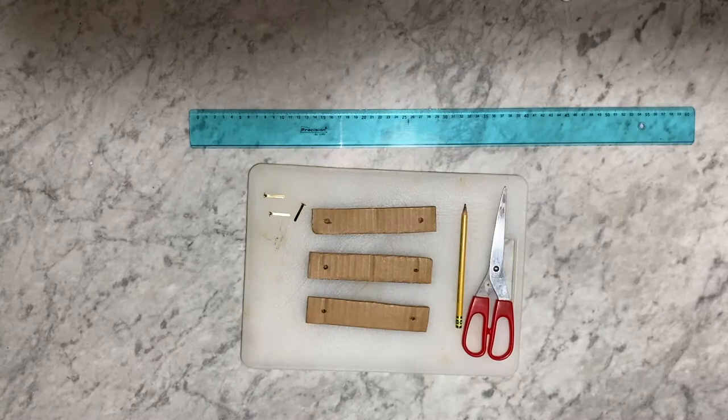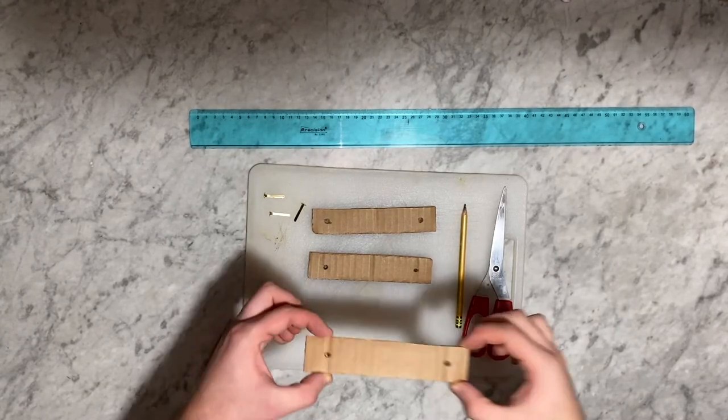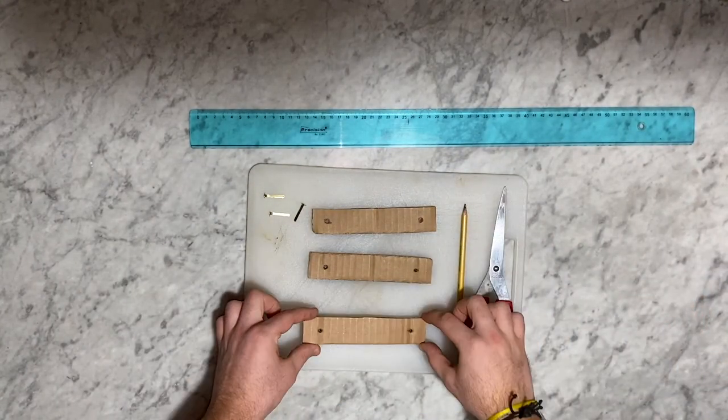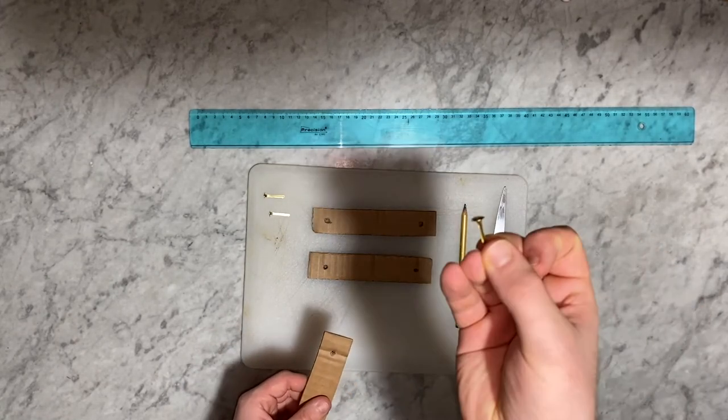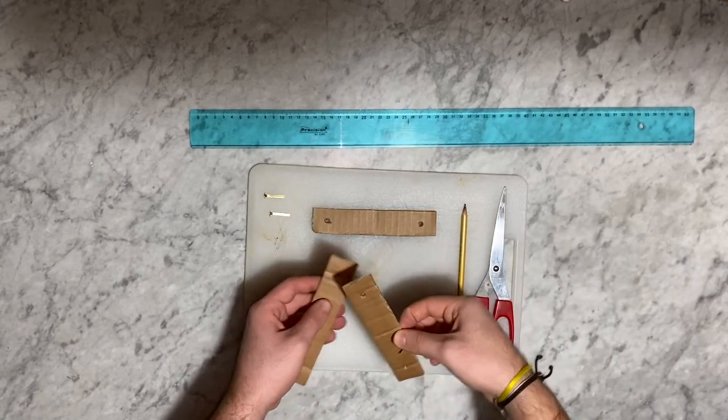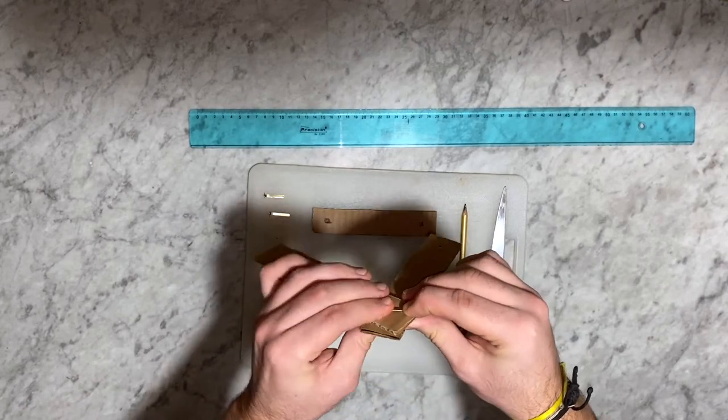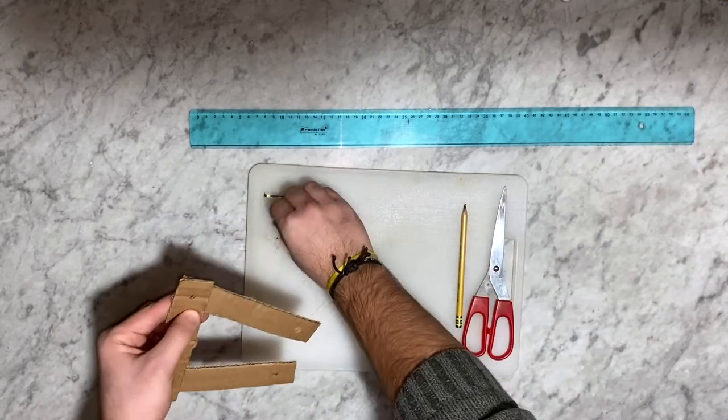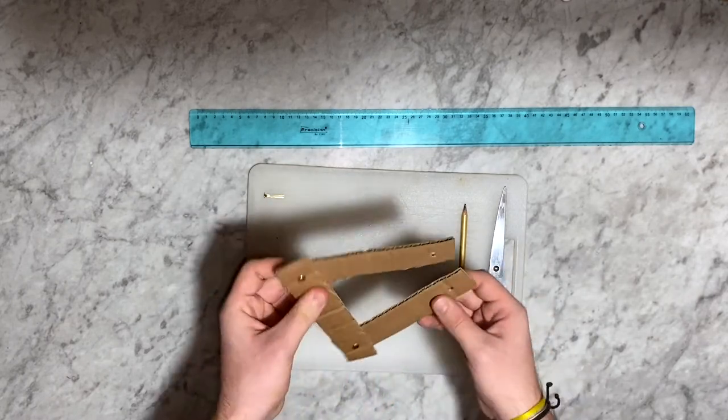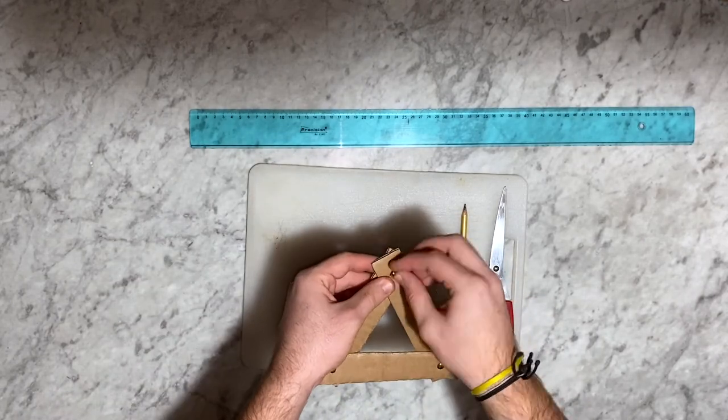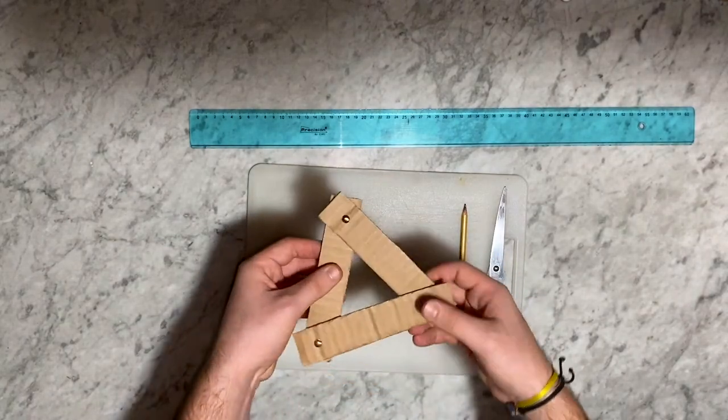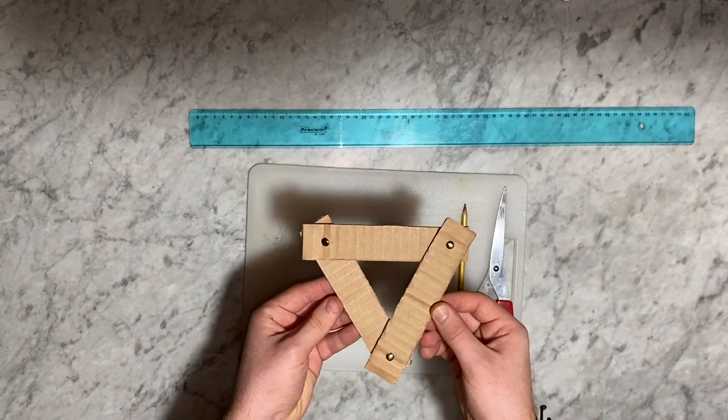We connect the rectangles with the simple clips. We've made a triangle. We can observe that it cannot move.